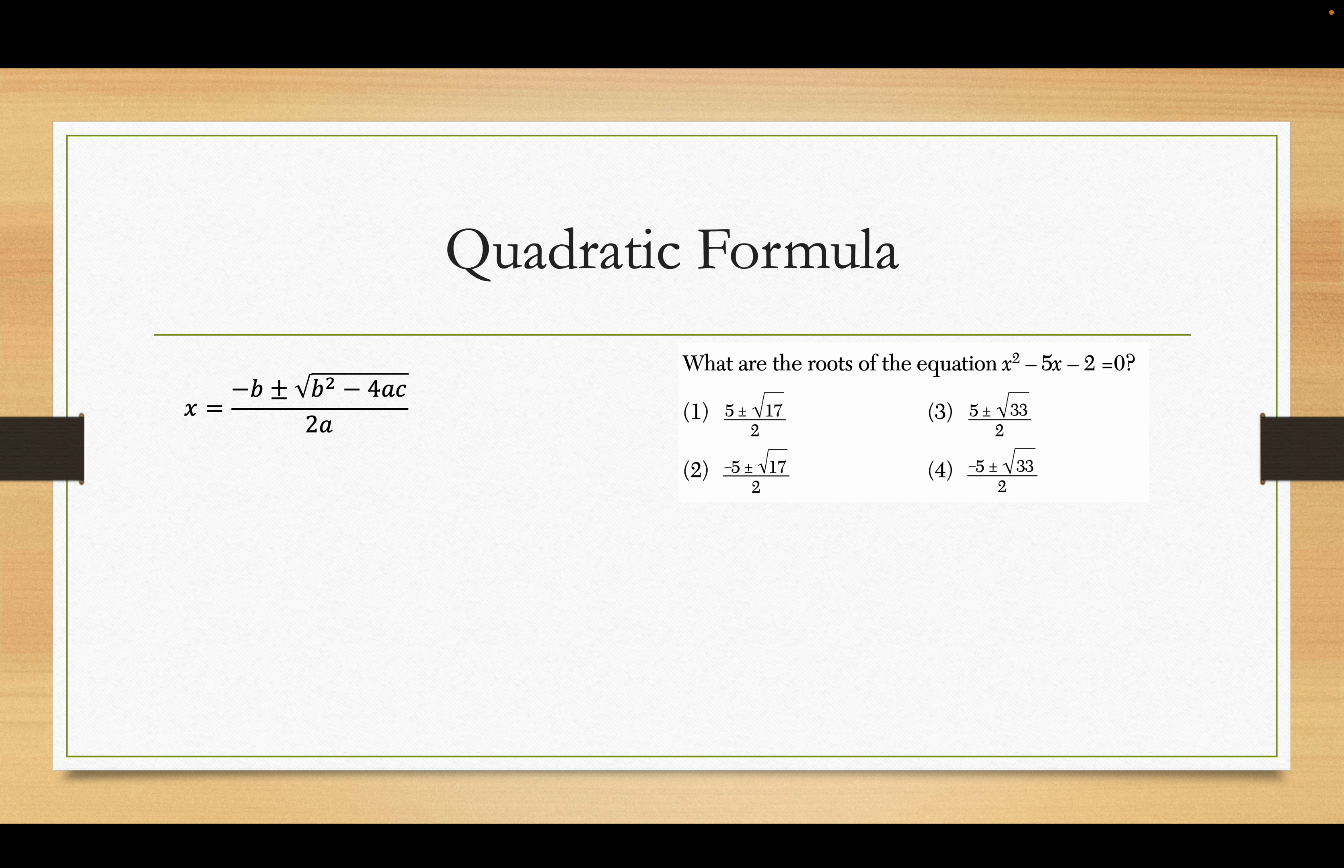Okay. So, here is the answers after stop and start. We got a is 1, b is negative 5, c is negative 2. So, x will be the negative of negative 5, right? Negative b. Plus or minus the square root of negative 5 squared. Make sure that's in parentheses in your calculator. Otherwise, it will give you the wrong answer.